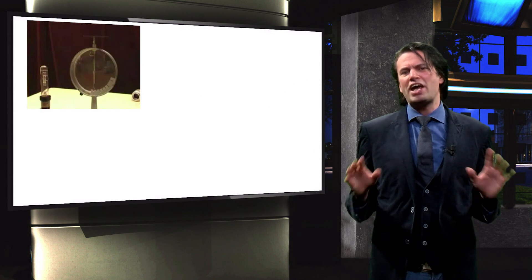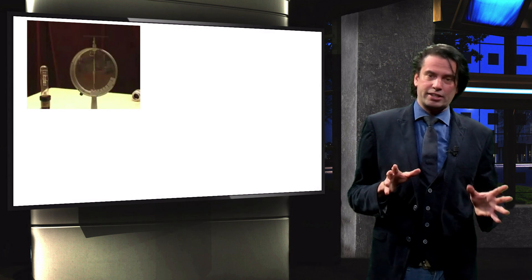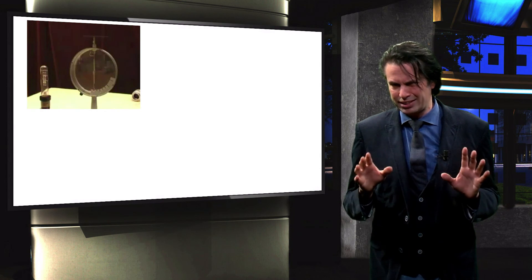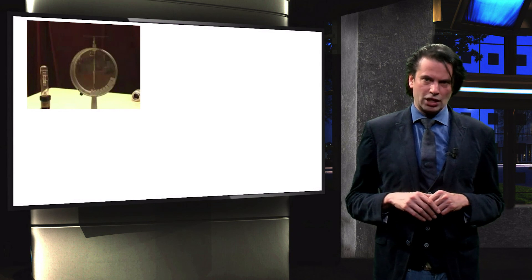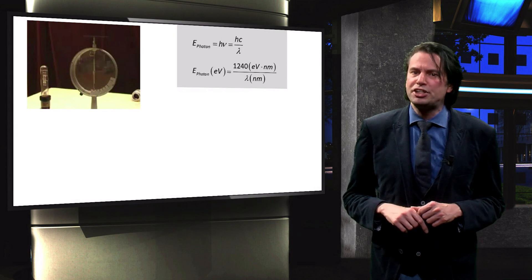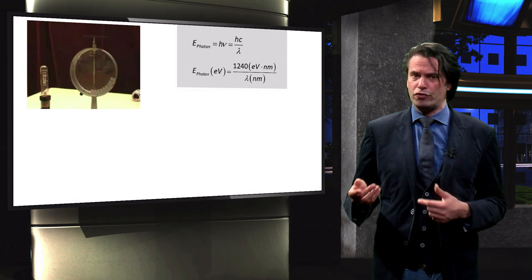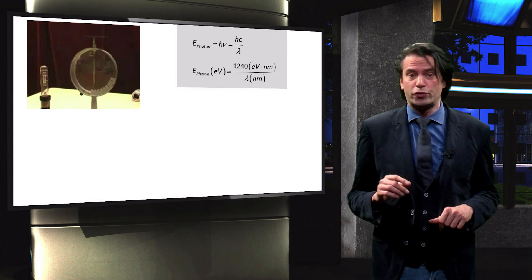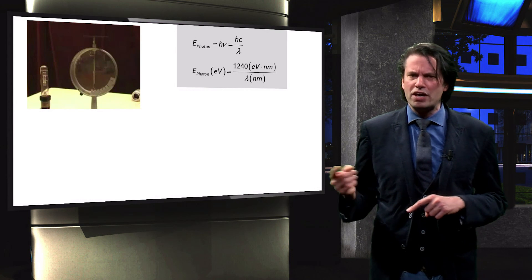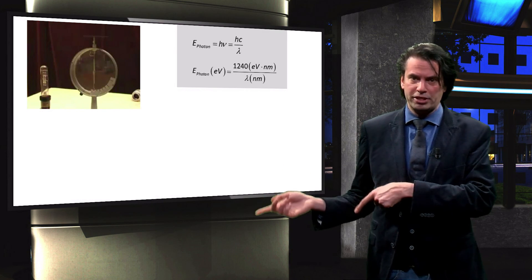In summary, we have discussed the photoelectric effect which demonstrates the wave-particle duality of light. We saw how the energy and wavelength of photons are inversely related, and that a conversion factor of 1240 can be used to relate the energy and wavelength in electron volts and nanometers.